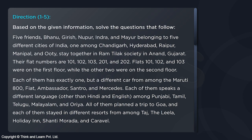Let's start talking about five friends: Bhanu, Girish, Nupur, Indra, and Mayur, belonging to five different cities of India — one among Chandigarh, Hyderabad, Raipur, Manipal, and Ooty. They stay together in Ram Tilak Society.